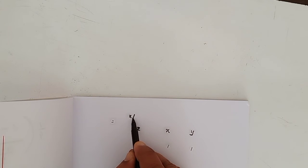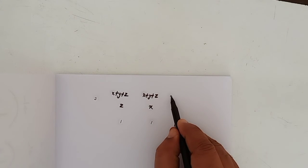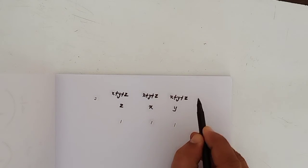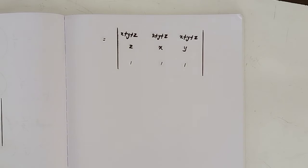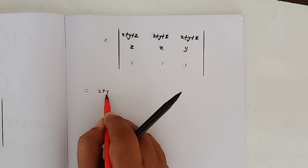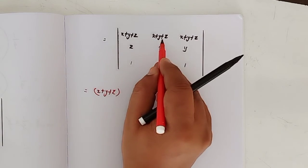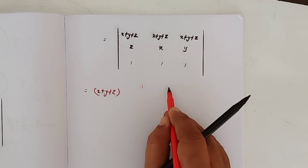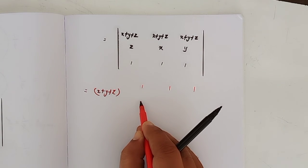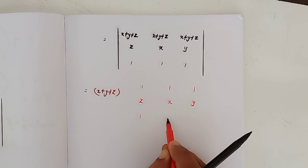Now from the first row we can take x plus y plus z as common. If we take x plus y plus z as common, here 1, here 1, here 1. Write 1, 1, 1, and second row z, x, y, and triple 1.